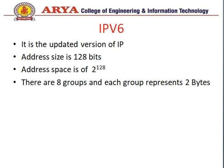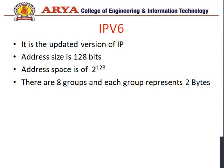This completes our discussion of IPv4. Next is IPv6, which is the updated version of the Internet Protocol. IPv6 is 128 bits, allowing 2 to the power 128 addresses. Here we divide our address into 8 groups, each representing 2 bytes.